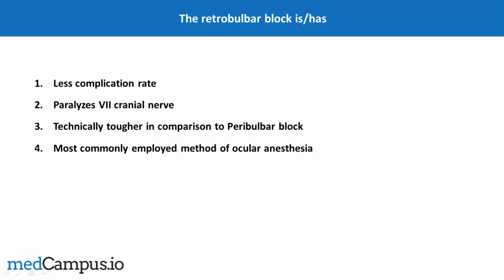The question is: the retrobulbar block has or is — option 1: less complication rate; option 2: paralyzes 7th cranial nerve; option 3: technically tougher in comparison to peribulbar block; option 4: most commonly employed method of ocular anesthesia. We have to choose one correct option.